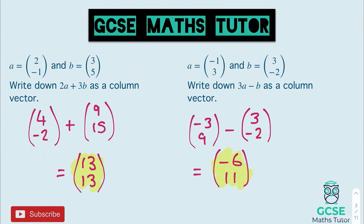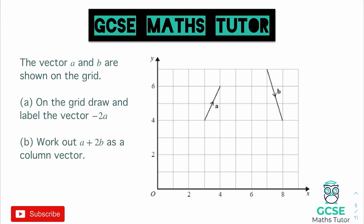For the next step, we're going to look at some of these vectors graphically and see how they look and how we might approach those sorts of questions. We've got some visual vectors drawn on the grid. The question says vector A and B are shown on the grid — vector A going upwards to the right, and vector B going downwards to the right.